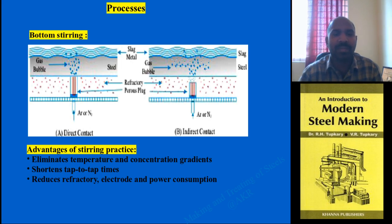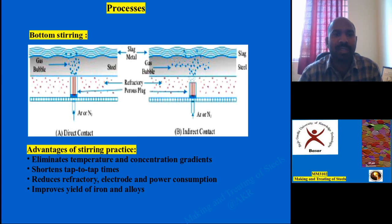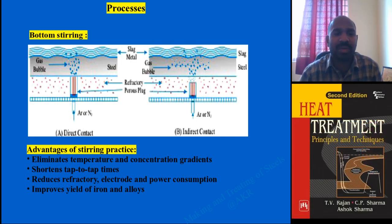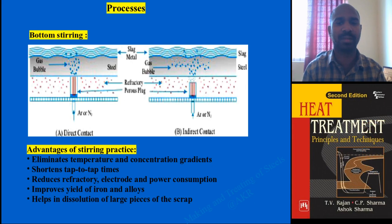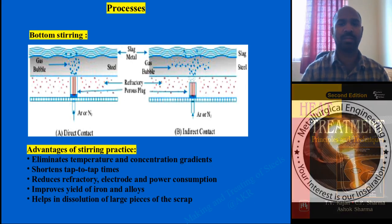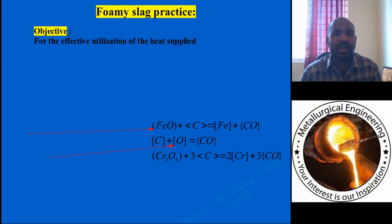With bottom stirring, refractory lining life, electrode consumption, and power consumption are all reduced. It also improves yield — the iron content and alloy content in molten metal produced from the EAF — enabling production of high alloy steels. Dissolution of large lumps of varying sizes can also be achieved. The bottom stirring process is a significant advancement in EAF steelmaking.